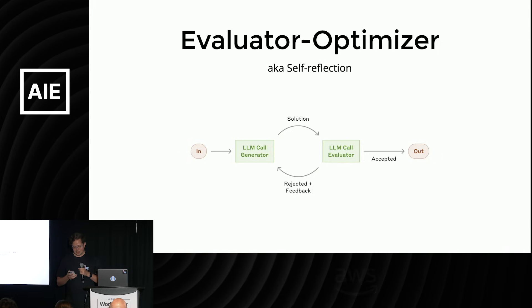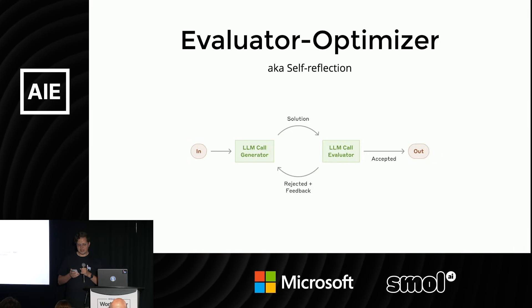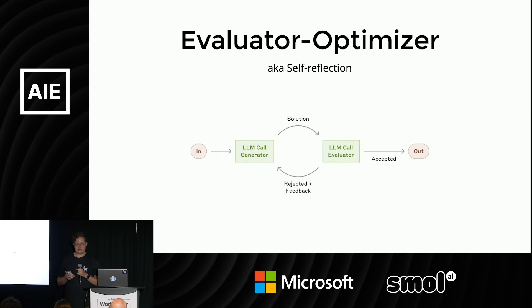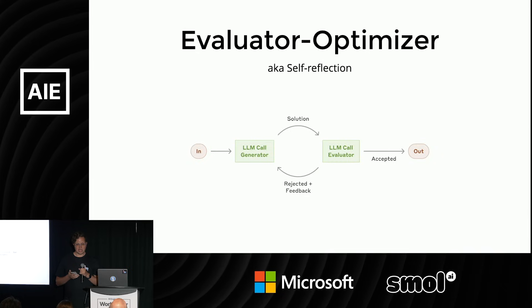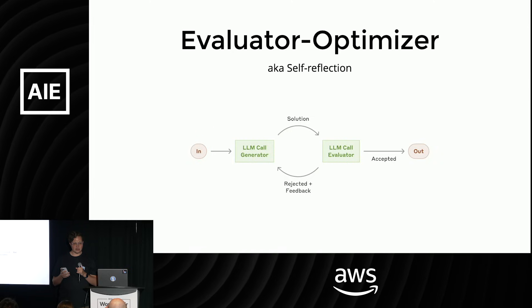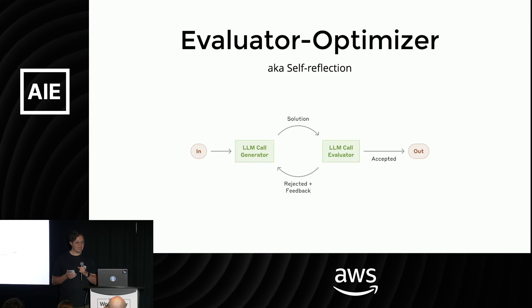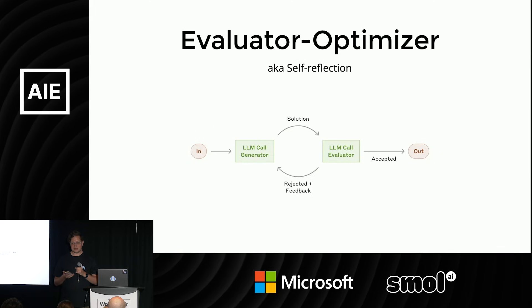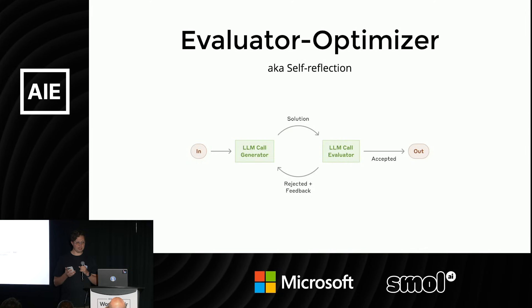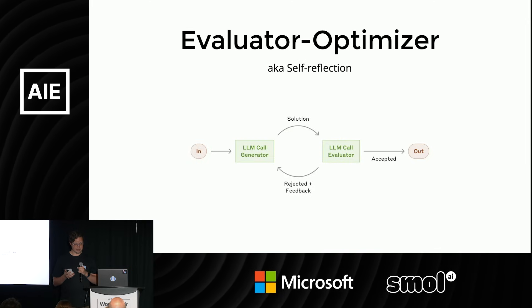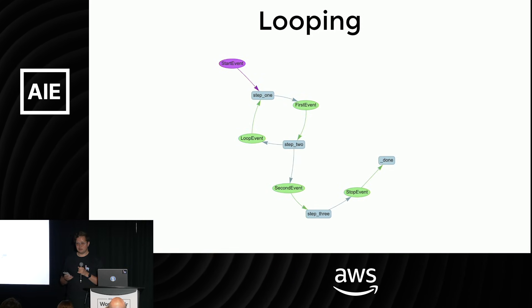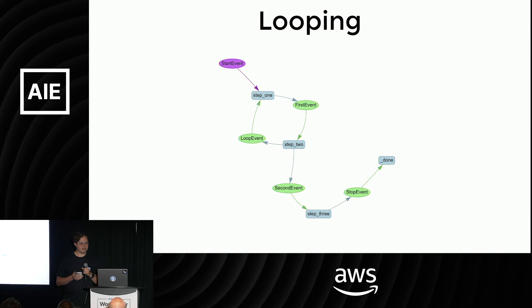This is also implemented using parallelization. The final pattern Anthropic called out is the evaluator optimizer, also called self-reflection. In this pattern, you use the LLM to decide whether or not the LLM has done a good job. You take your output, feed it to an LLM, and say: here was the original question and the goal — have you actually reached that goal? If not, you get the LLM to generate feedback and send it back to the first step, saying you almost got the answer but you hallucinated something or missed part of the question. In Llama Index workflows, you just create a loop and send yourself back to step one.